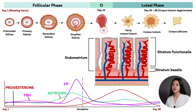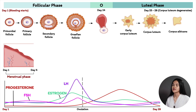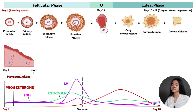The uterine cycle can be divided into three phases: the menstrual phase, proliferative phase, and secretory phase. The menstrual phase is day one to five. During menstruation, the epithelial lining of the uterus degenerates — this is the source of menstrual flow. The stratum functionalis, the functional and superficial layer, is the part of the endometrium that is lost and disintegrated.